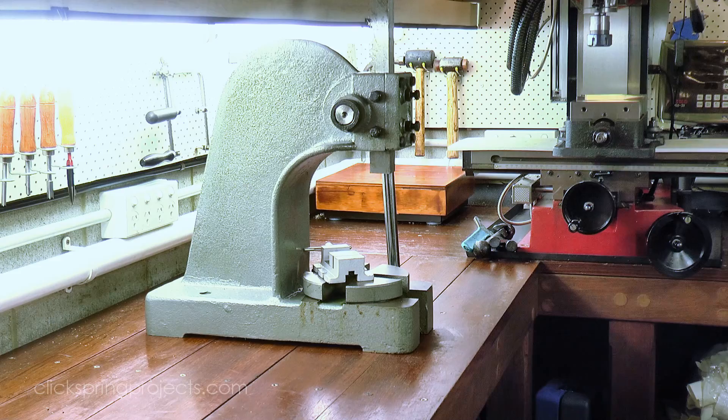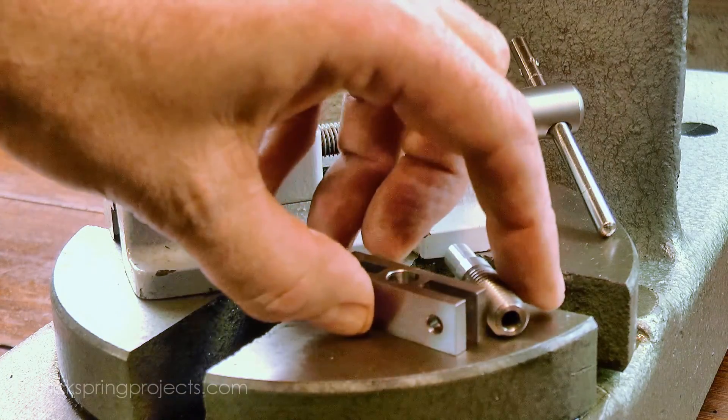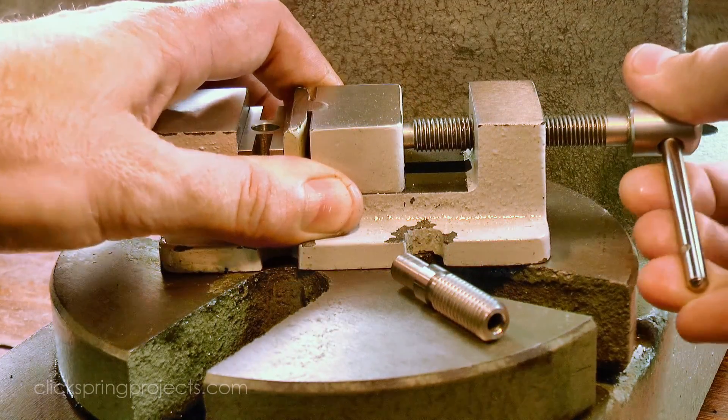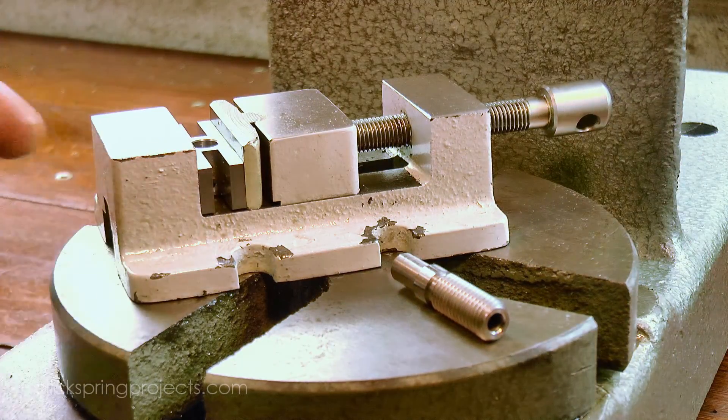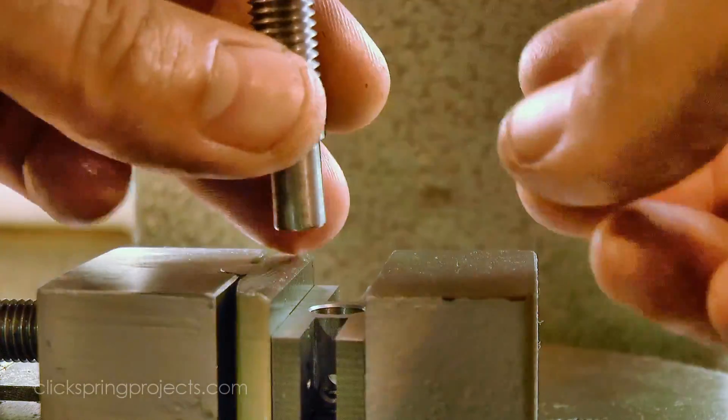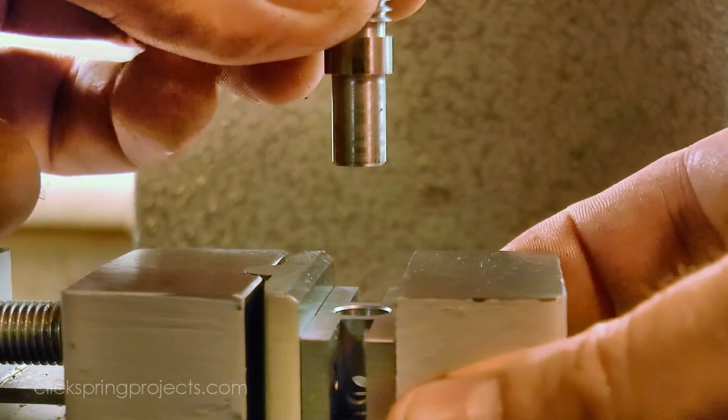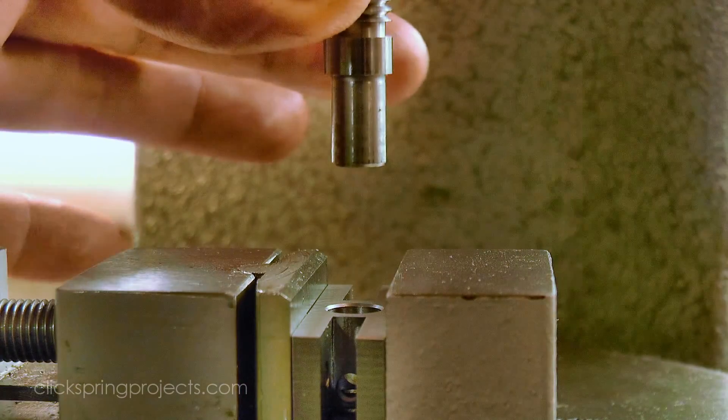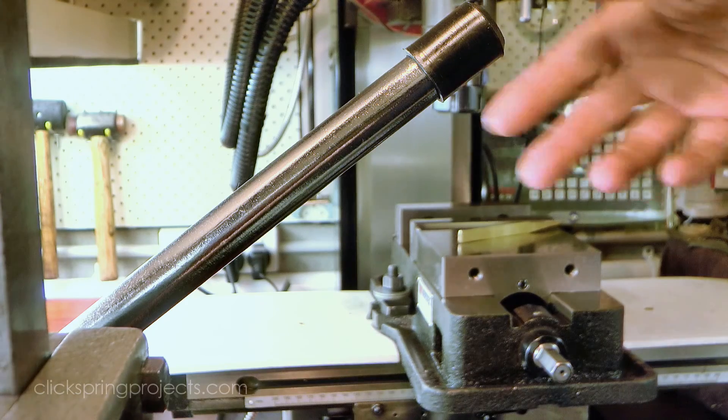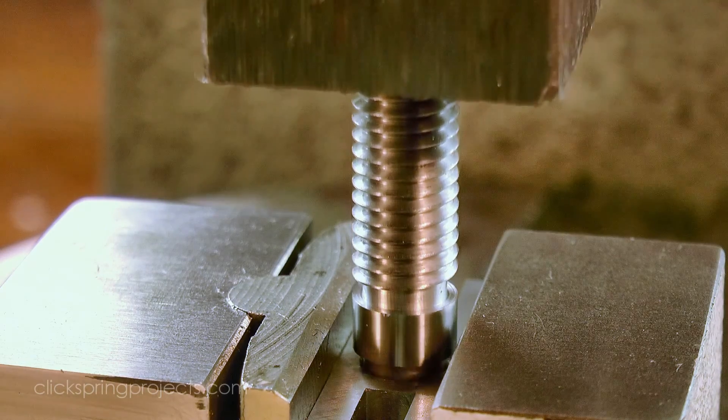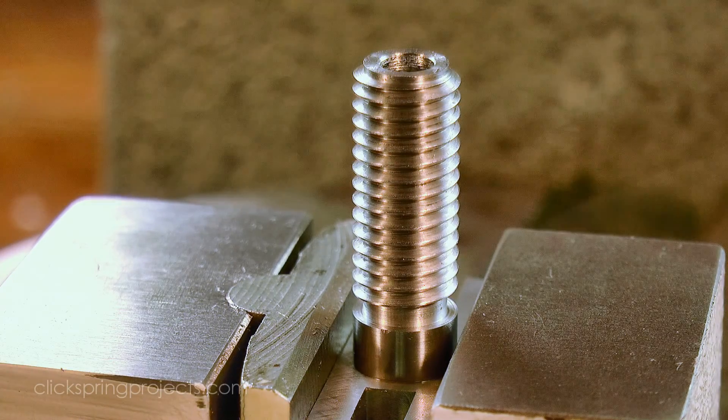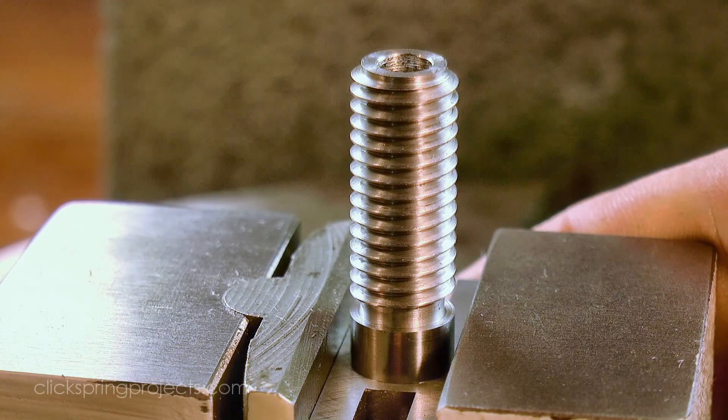And I'm using this arbor press to do the job. I'm holding the pivot block using a simple drilling vise. It'll make it easier for me to hold the part, and keep the block upright and square with the action of the arbor press. And just like that, the two parts are joined for good.